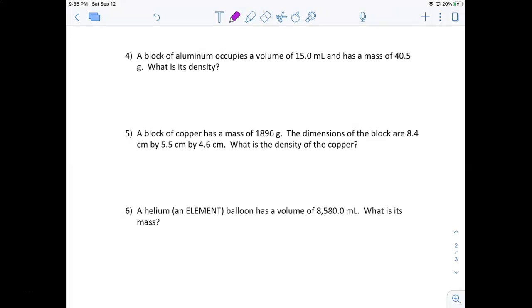So I'm going to go ahead and do this quickly since you did it on your own. So density equals 40.5 over 15. And that equals, let's see, 40.5 divided by 15, 2.7 grams per milliliter.